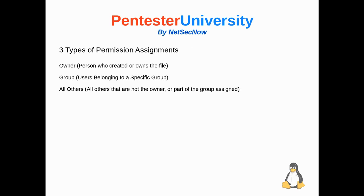There are three types of permission assignments. You have the owner, or the person who created or owns the file. Then you have the group, which is the users belonging to a specific group. And then you have everybody else, which are all other users that are not the owner or part of the group assigned to that file.